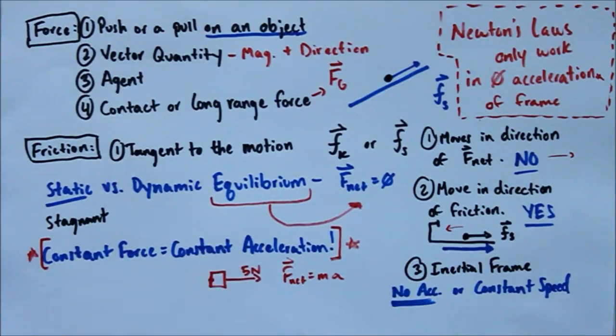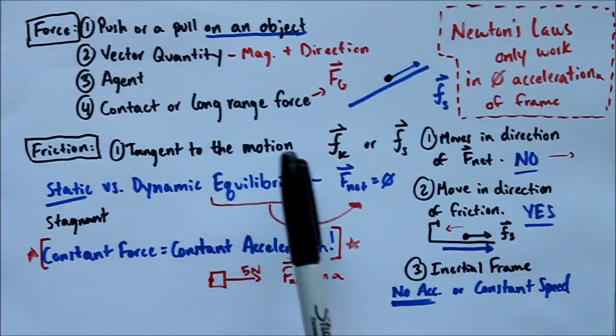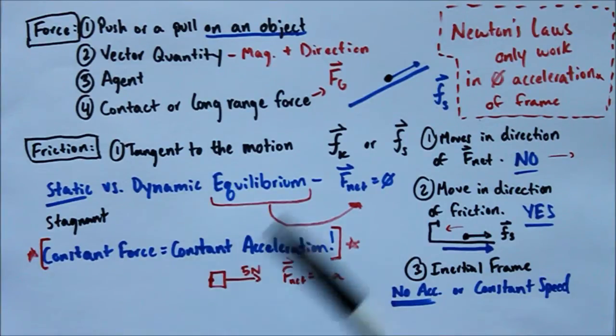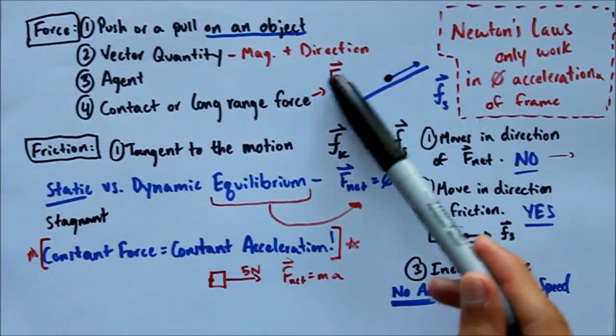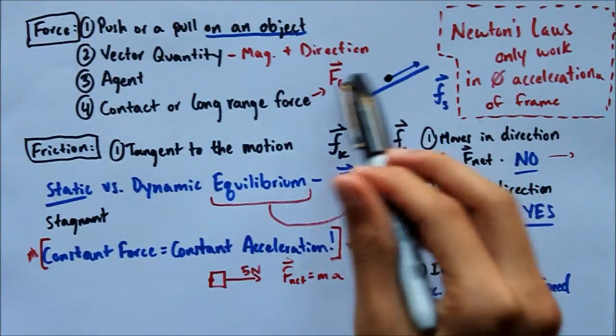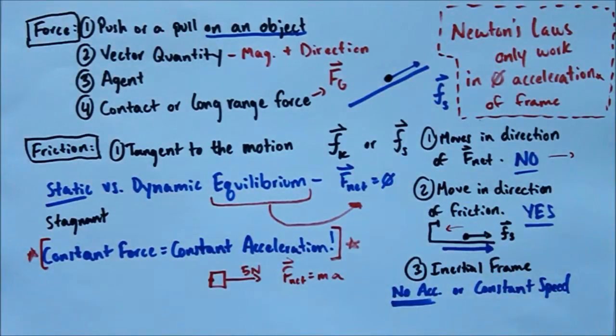And the last part is that forces can be of two types, contact forces or long range. The only long range force we'll be concentrating on in this class is the force of gravity. And remember, it's F with a subscript of capital G. Now, that capital G was a big topic of discussion in our AP physics class. Someone wrote it as lowercase g, and everyone started freaking out. Just remember, it's capital G. That's important. Notations are where most of your points are going to be coming from, besides the right answer. Okay. So those are the four characteristics of a force.